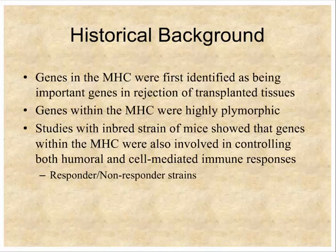It was also noticed that these were highly polymorphic genes. If you looked in the human population, there were hundreds of different alleles. Initial breakthrough studies came from inbred strains of mice, which showed that these same genes in the same locus were also involved in immune responses. Some strains of mice would respond to a particular antigen, others would not. When mapped, those response-controlling genes also mapped to the MHC region.